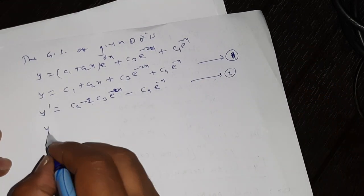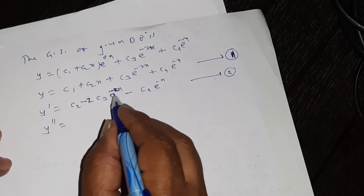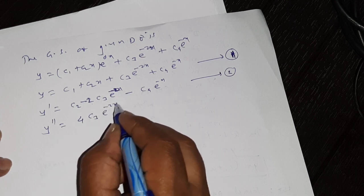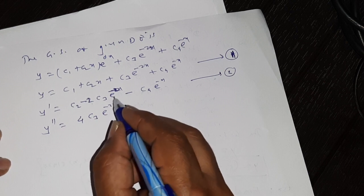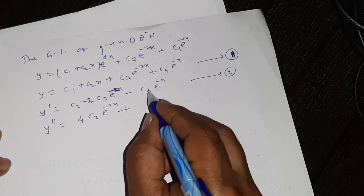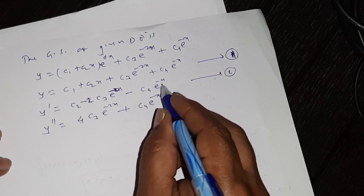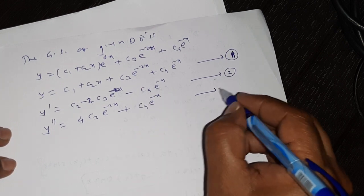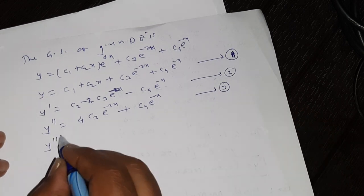Then y'' is: again the derivative of c2 is 0. Minus 2 times minus 2 becomes plus 4, so we get 4·c3·e^(-2x). The derivative of e^(-2x) is e^(-2x) times (-2), so minus 2 and minus 2 become plus 4. Then c4·e^(-x), derivative of e^(-x) is e^(-x) times (-1), so this minus 1 becomes plus 1. This is equation 3.